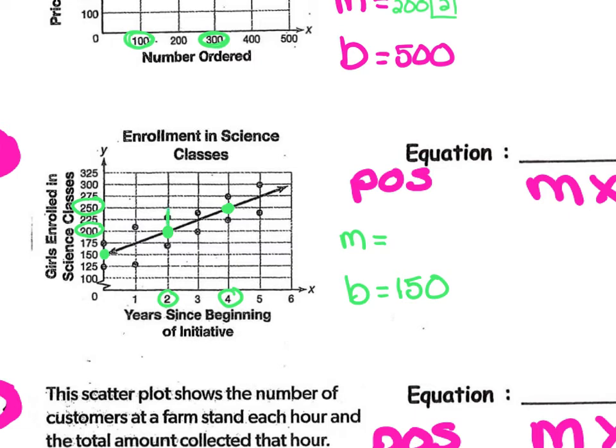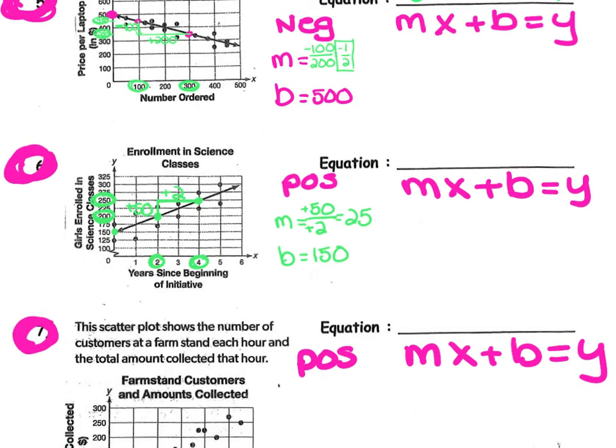I can calculate the rise and the run with any two points on that line. To go from 2 to 250, that's a rise of 50. And to go from 2 to 4, that's a difference or a gain of 2. My slope is positive 50 over positive 2, which of course is 25. Write an equation for this line. Turn the video back on when you're ready. You should have gotten 25x plus 150 equals y.